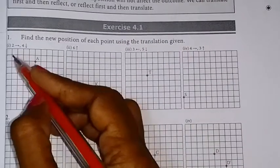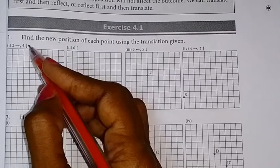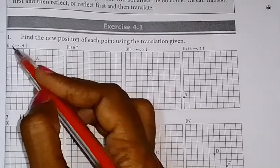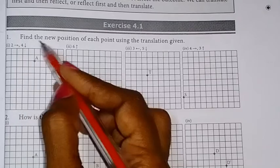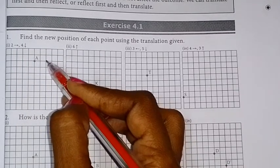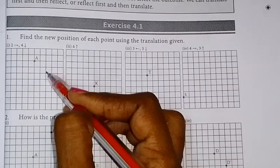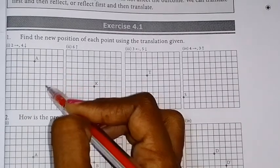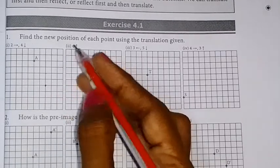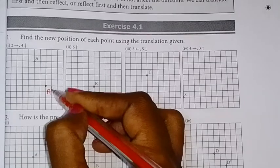So, how do you get a translation? 2 units right side, 4 units downwards. So, the point is 2 units right side. So, 1, 2. So, here is 4 units downwards: 1, 2, 3, 4. So, here is the image. So, this will be a dash.